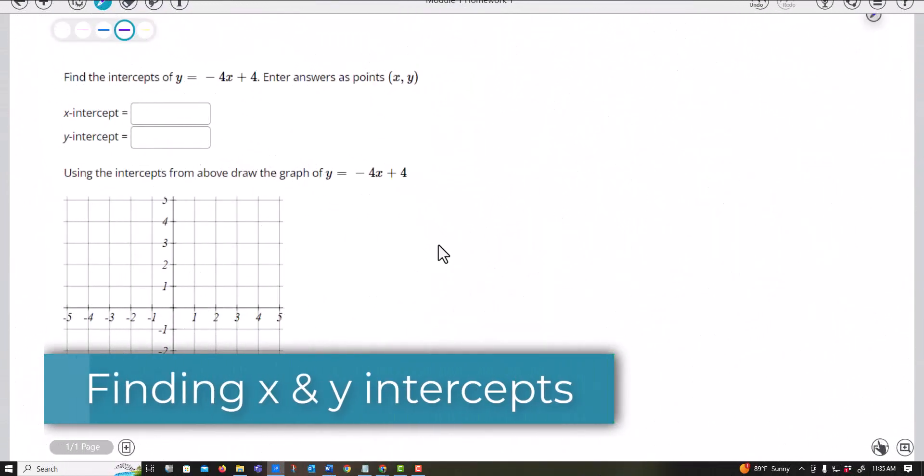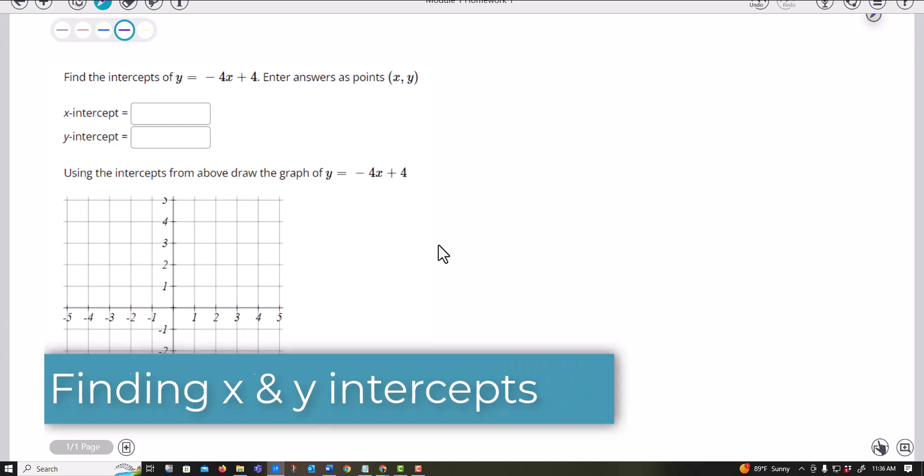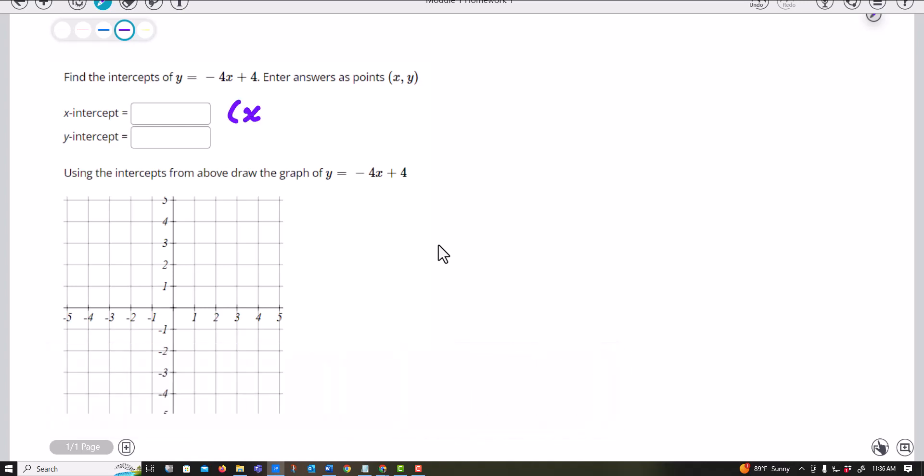When I want to find an x-intercept or a y-intercept, an x-intercept has an x value and the y is 0 because it intercepts the x-axis. Notice you didn't go up or down, so your y value is 0. Where a y-intercept, your x is 0 and you have some y value.